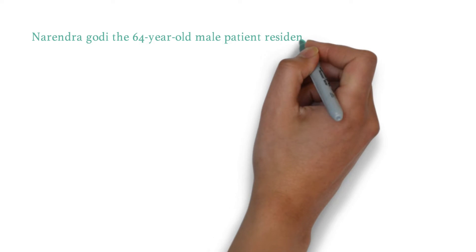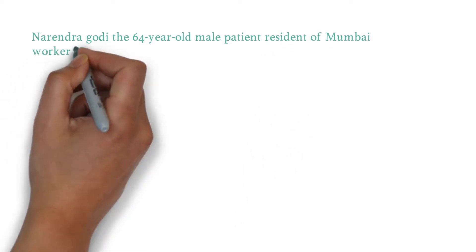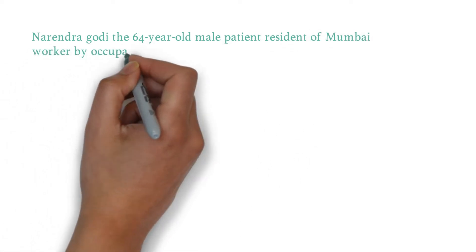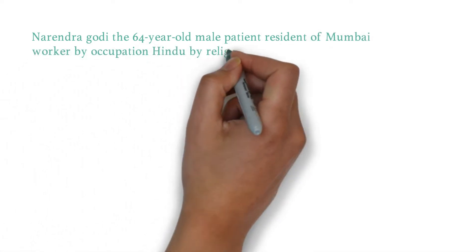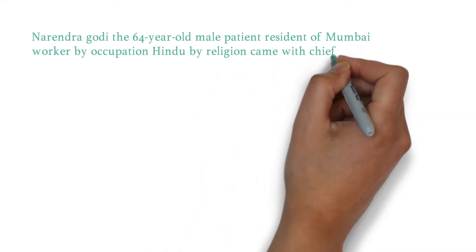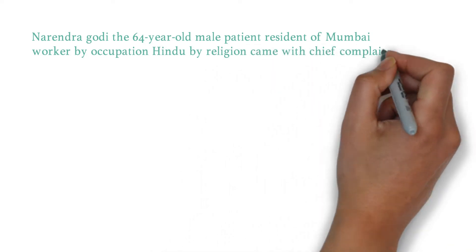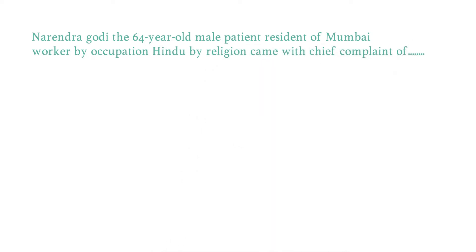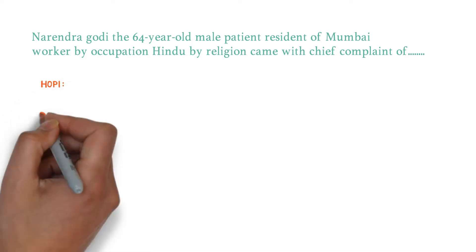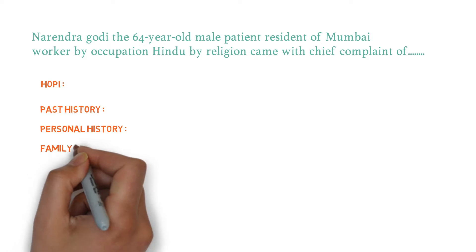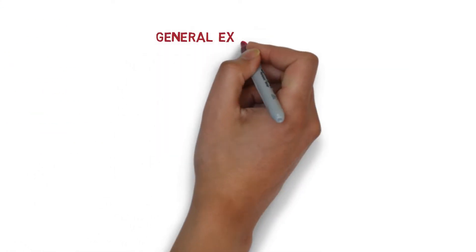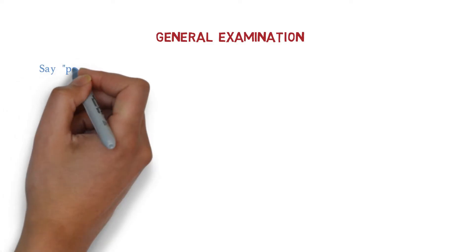In the previous topic, we discussed why we ask for name, age, sex, occupation, religion, and address — all these details have very significant value. We discussed how to take chief complaints and history of present illness (HOPI), then past history, personal history, and family history. After that, we go for general examination. First of all, we say the patient is conscious, cooperative, and coherent.